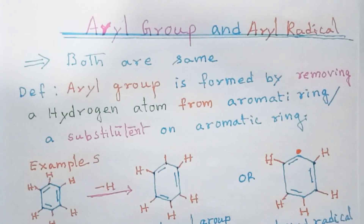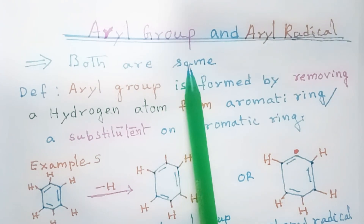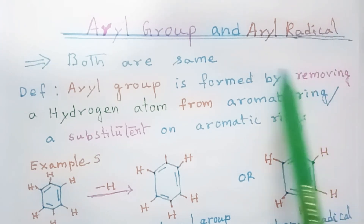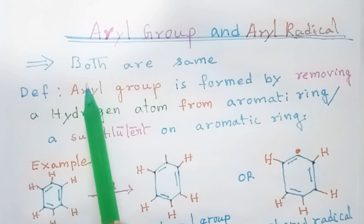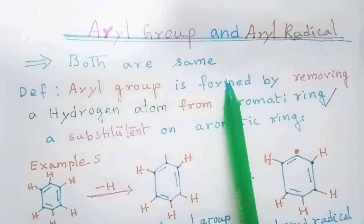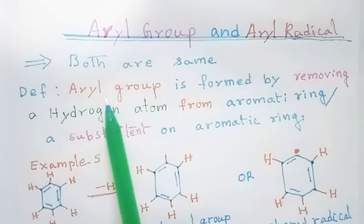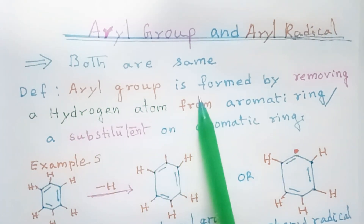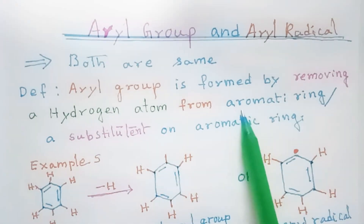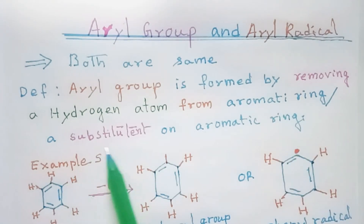In this lecture we will learn about what is an aryl group and what is an aryl radical. Both aryl group and aryl radicals are the same but they are represented in a different way. An aryl group is formed by removing a hydrogen atom from an aromatic ring or a substituted group on an aromatic ring.